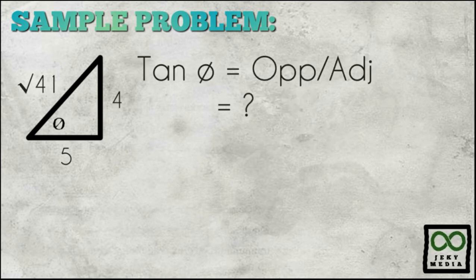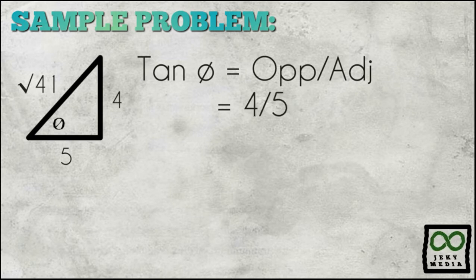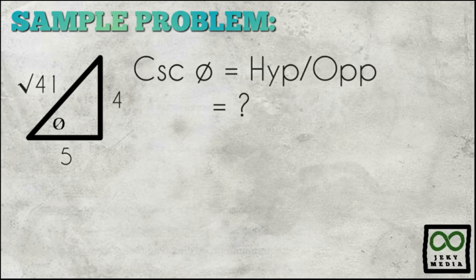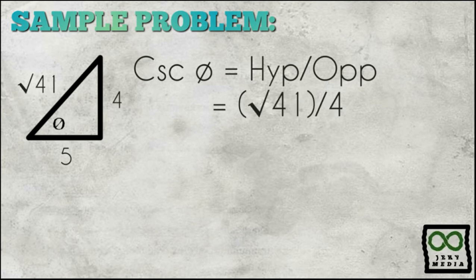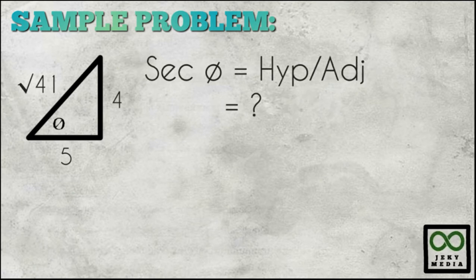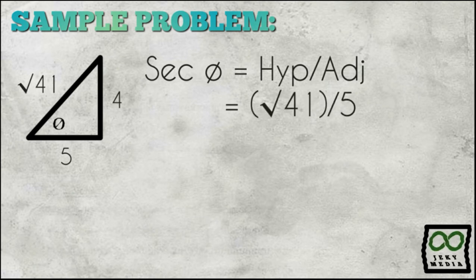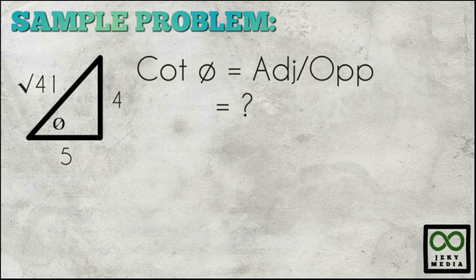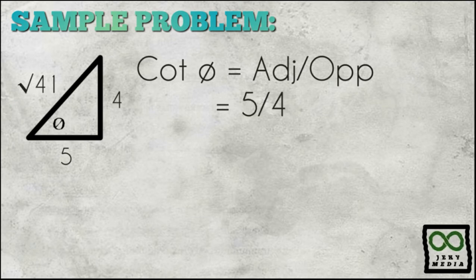For tangent theta — opposite over adjacent — the ratio is 4 fifths. For cosecant theta — hypotenuse over opposite — the ratio is square root of 41 over 4. For secant theta — hypotenuse over adjacent — the ratio is square root of 41 over 5. For cotangent theta — adjacent over opposite — the ratio is 5 quarters.